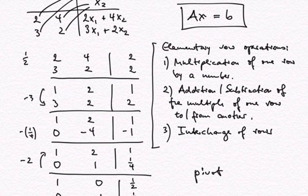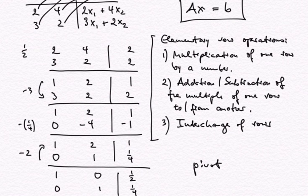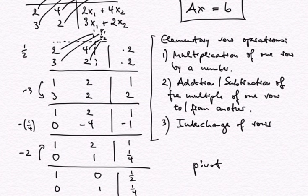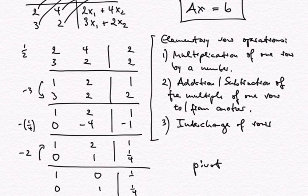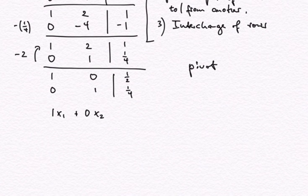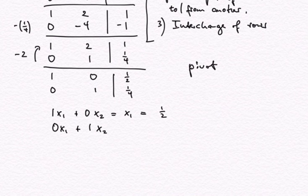After row reduction, we have 1 times x1 plus 0 times x2 equals one half, and 0 times x1 plus 1 times x2 equals one quarter. We recognize that's our solution. Notice also that the matrix on the left-hand side is the identity matrix. Multiplying any vector by the identity matrix returns the same vector — it is the matrix equivalent of the number one.